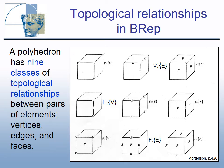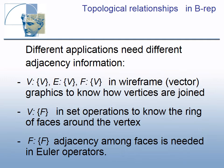Topological relationships of adjacency and incidence are important in BREP. A polyhedron has nine classes of topological relationships between pairs of elements — vertices, edges, and faces. For example, the second relationship in the top row means all edges adjacent to the given vertex. The first relationship in the middle row means two vertices incident to the given edge. Different applications need different adjacency information, including wireframe graphics, set operations, and Euler operators.